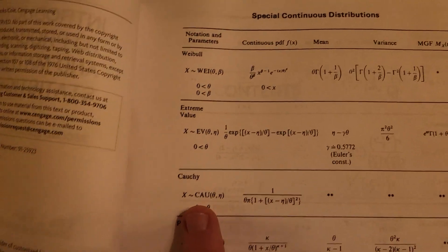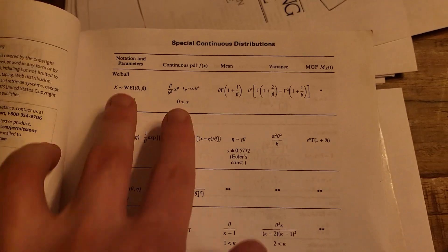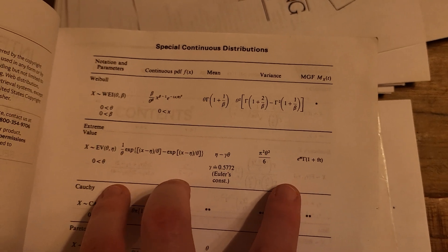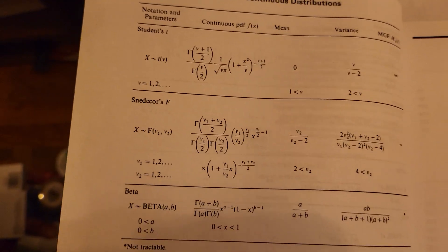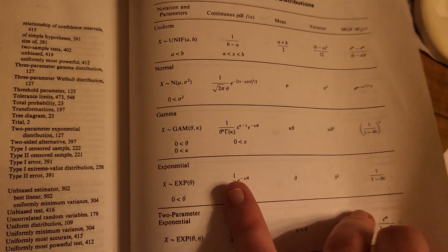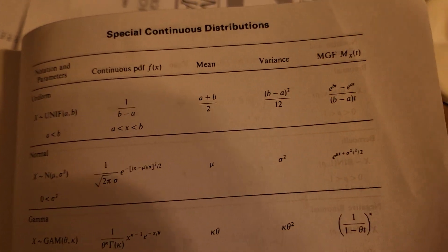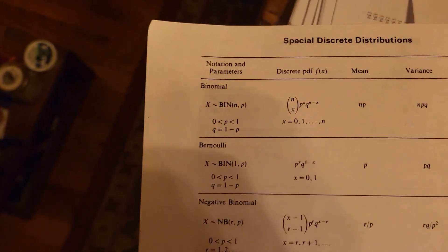I also like that at the start of the book it lists all the important distributions you'll need, with facts about their PDF, mean, variance, and moment generating functions, as well as the parameters that define each distribution. So we have the t-distribution, f-distribution, and beta distribution. At the very end of the book there are more: uniform, normal, gamma, exponential, two-parameter exponential, double exponential — listing their notation, parameters, continuous PDF, mean, variance, and MGF. It also covers discrete distributions: binomial, Bernoulli, negative binomial, geometric, hypergeometric, Poisson, and discrete uniform.